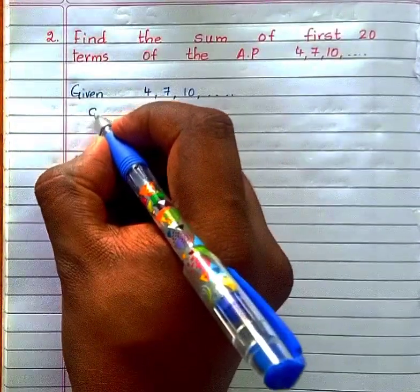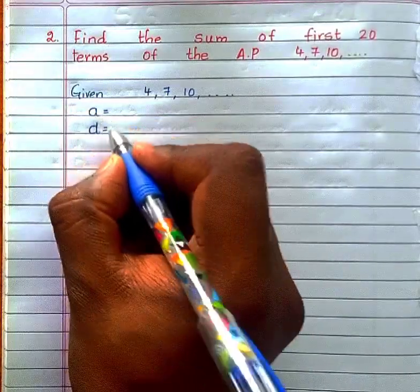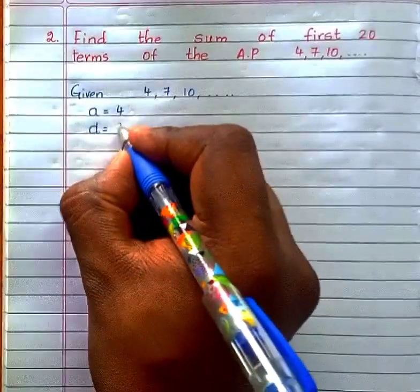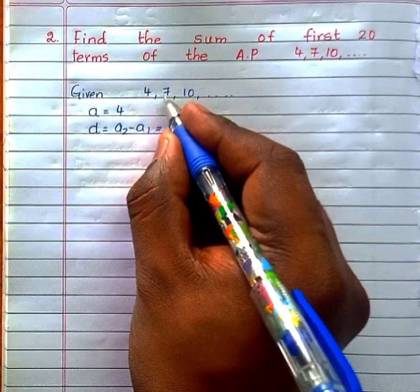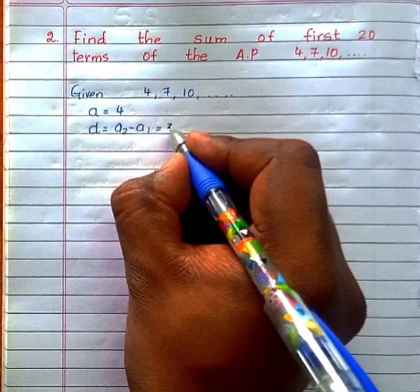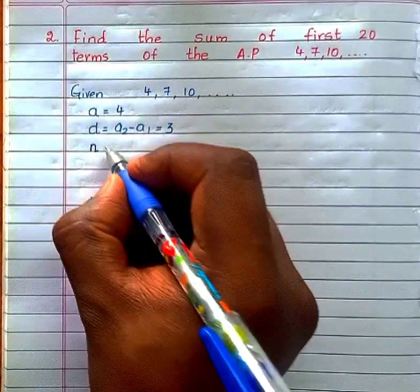The first step is find out the value of first term and the common difference. What is the first term? First term is 4. What is the common difference? That is difference of any two consecutive terms. I will take here a₂ - a₁, that is 7 - 4 = 3 or 10 - 7.